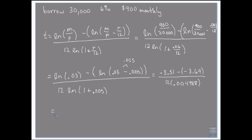And then the natural log of 1.005 is 0.004988. So 3.51 negative plus 3.69. 0.18 is 0.18.